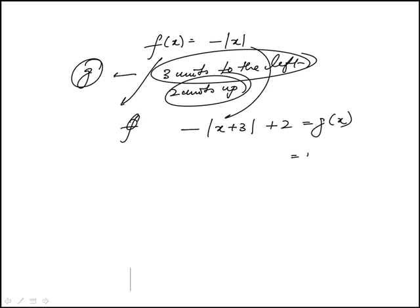We need to find g of minus two, so replace x with minus two. So this is minus the absolute value of minus two plus three, which is one.